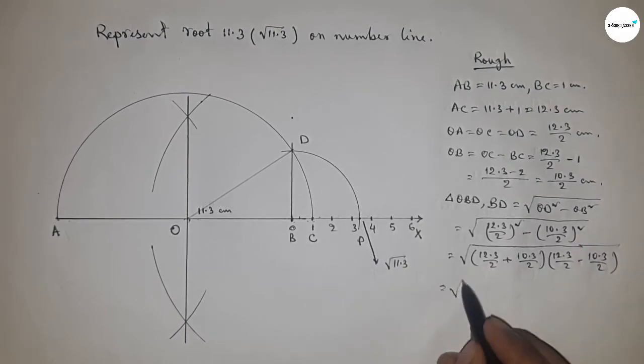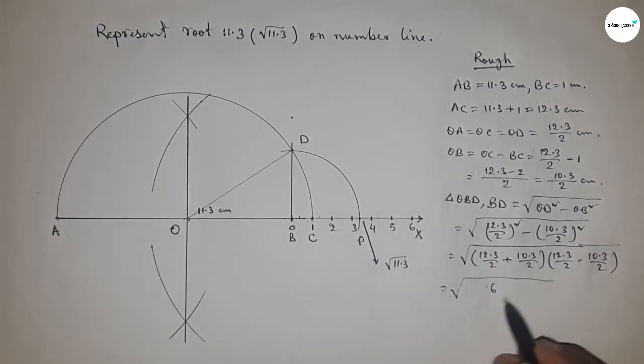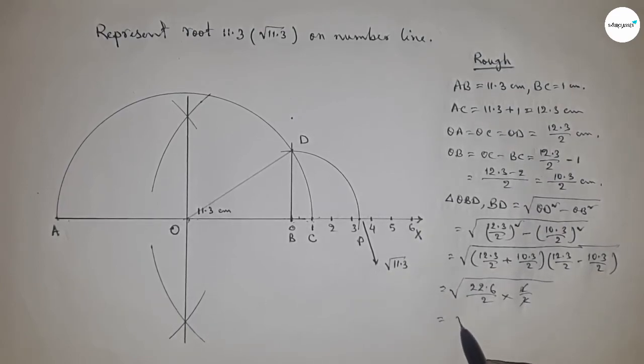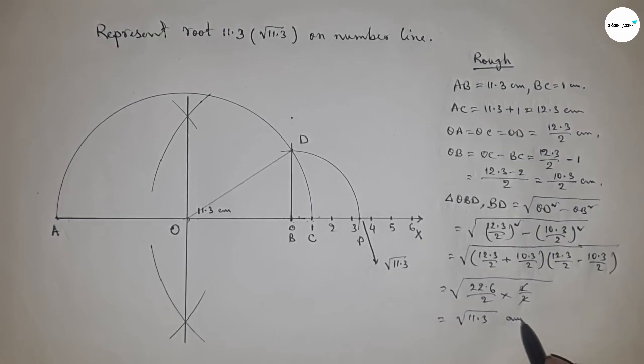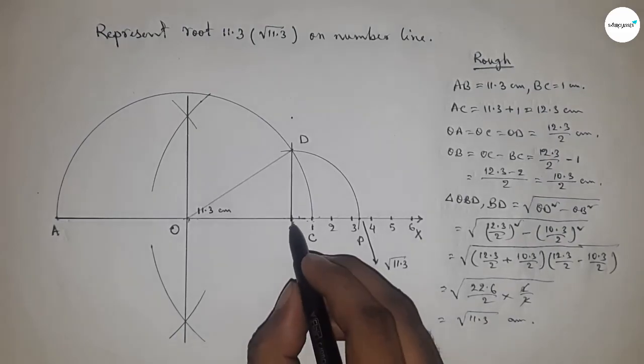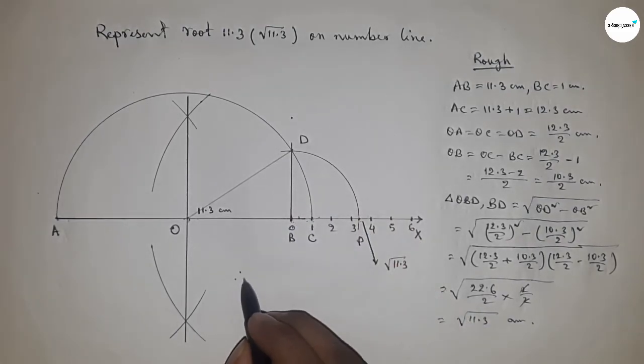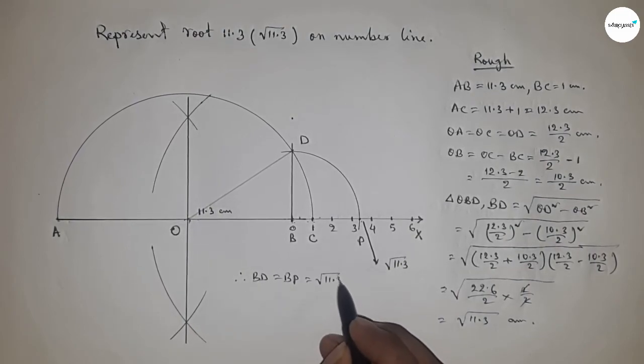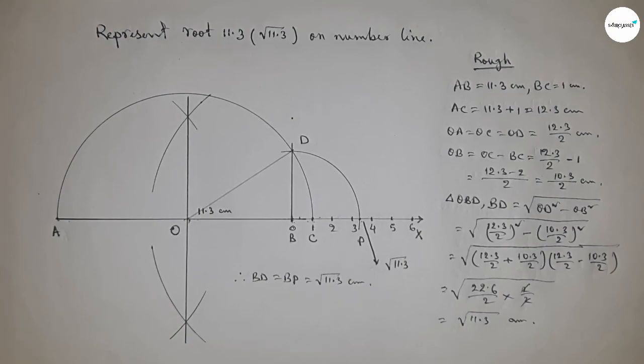So from this, this is 6.2, 2.6 by 2 into 2 by 2, so this is 11.3 centimeter. Therefore, distance BD and BP are equal. So BD equal to BP equal to root 11.3 centimeter. That's all, thanks for watching.